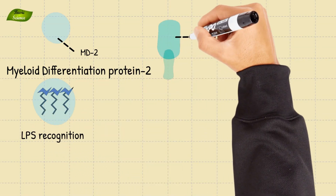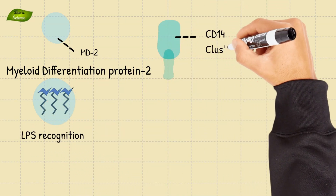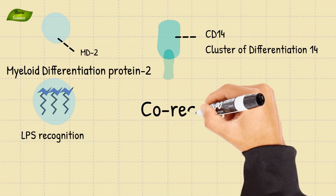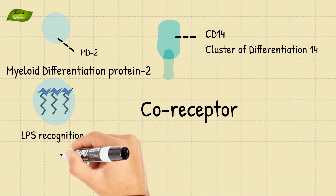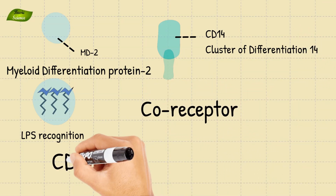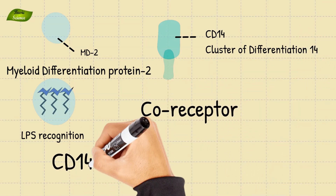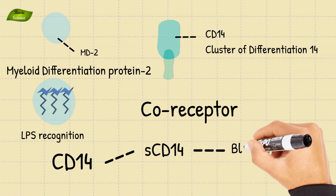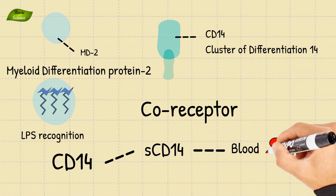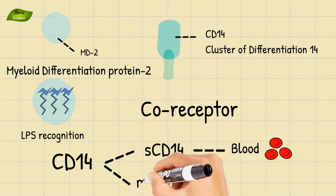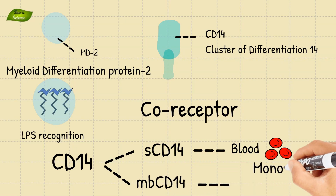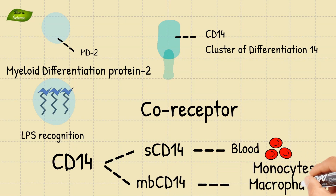CD14, or cluster of differentiation 14, serves as a glycoprotein coreceptor for LPS. CD14 exists in two forms: soluble in the bloodstream, and membrane-bound on immune cell surfaces, especially on monocytes and macrophages.